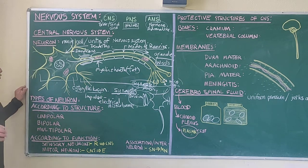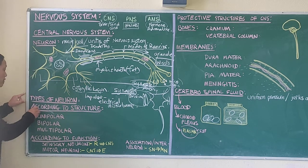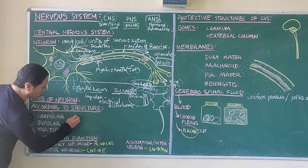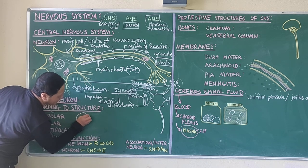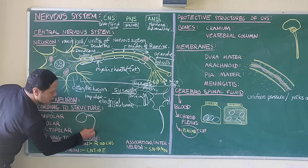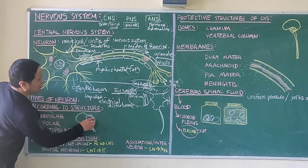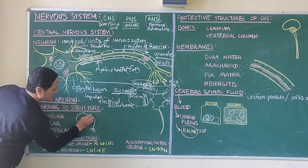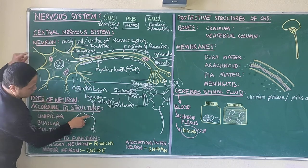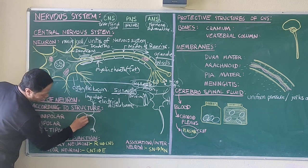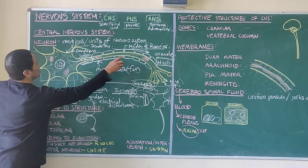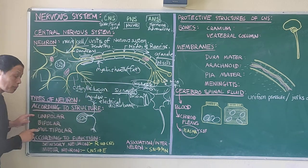Now, there are different types of neurons according to structure — there are three. Unipolar has just one finger-like projection that projects out, and it differentiates into an axon and forms the dendrite — just one finger-like projection forming both structures. Bipolar mostly refers to sensory neurons; sensory neurons are unipolar.